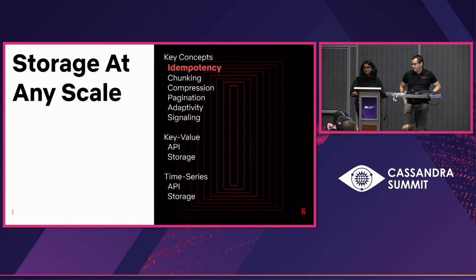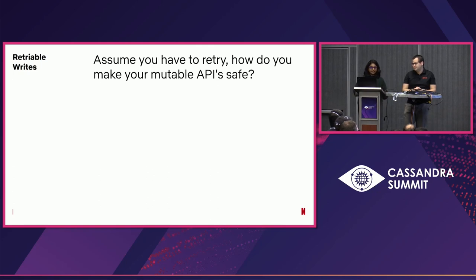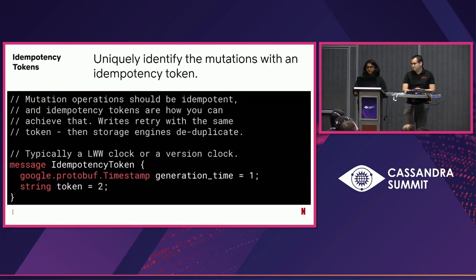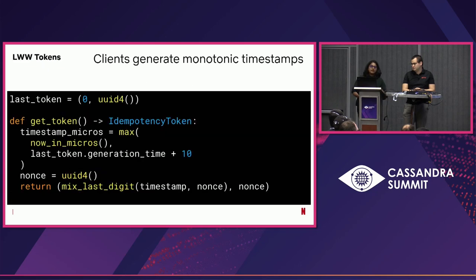The first concept is idempotency tokens. Systems fail, and when they fail you need to rewrite the data. Can you rewrite safely? For example, if you take a bank transaction and write twice the same withdrawal amount, is that safe? It's not. We first write with an idempotency token — a token can be any token you generate out of the system — and when you rewrite the same data with the same token, it should deduplicate. We generate the idempotency token through a timestamp and a generated token which can come from anywhere.